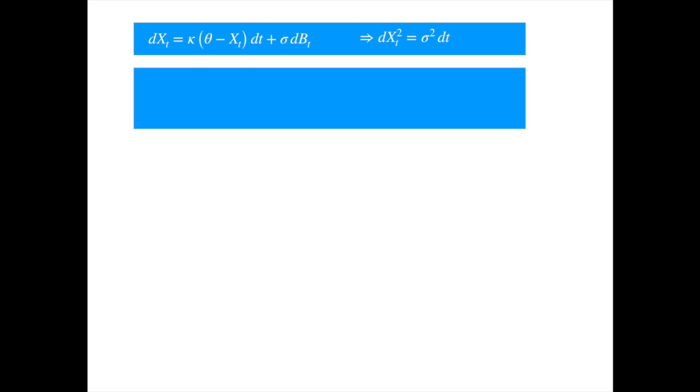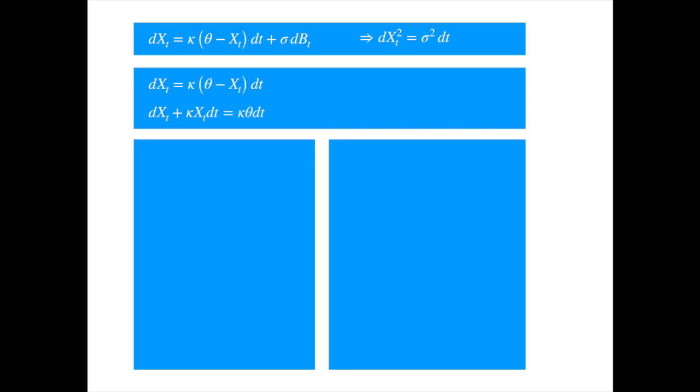To solve this equation, let's first consider the deterministic version of this equation. We just remove the diffusion term. Moving x to the left-hand side, we get dx_t = kappa(theta - x_t)dt. This equation is in differential form, so let's write it in derivative form to make it look like how it is usually presented in ordinary differential equations. Here, x is a function of t. We also replaced kappa times theta by b, just to make it look less intimidating.